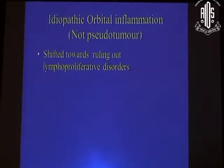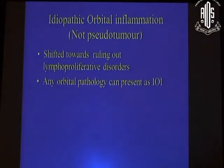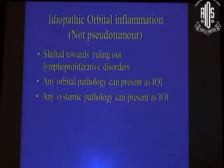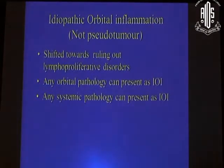Our role has changed completely from diagnostic inflammation to ruling out serious disease like lymphomas. Any orbital pathology — let it be lymphoma, let it be other tumors — can present as idiopathic orbital inflammation. Any systemic disease, say a small prostate carcinoma, uterine carcinoma, breast carcinoma, lung carcinoma, carcinoma of the bowels, can present as idiopathic inflammation in the orbit. This is a sort of paraneoplastic reaction. So if a biopsy comes back as idiopathic inflammation, be sure to investigate the patient thoroughly to rule out underlying carcinomas — any systemic carcinoma, without being a secondary in the orbit, can present as an inflammation in the orbit.